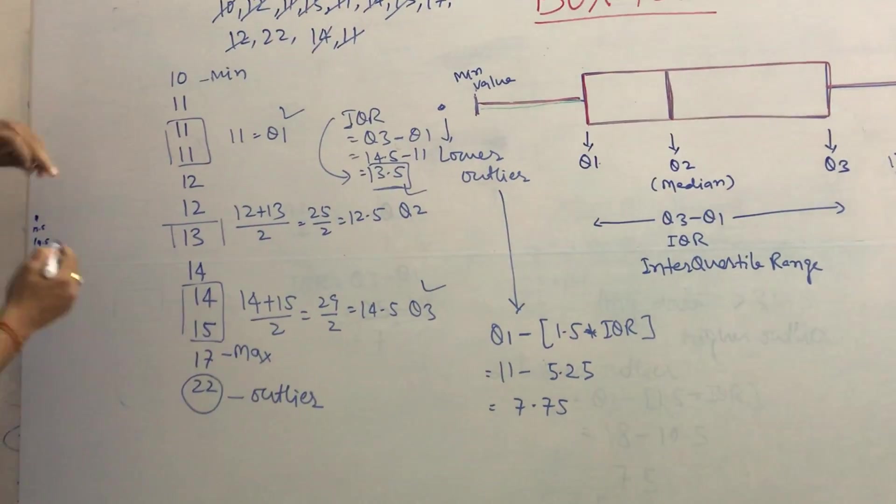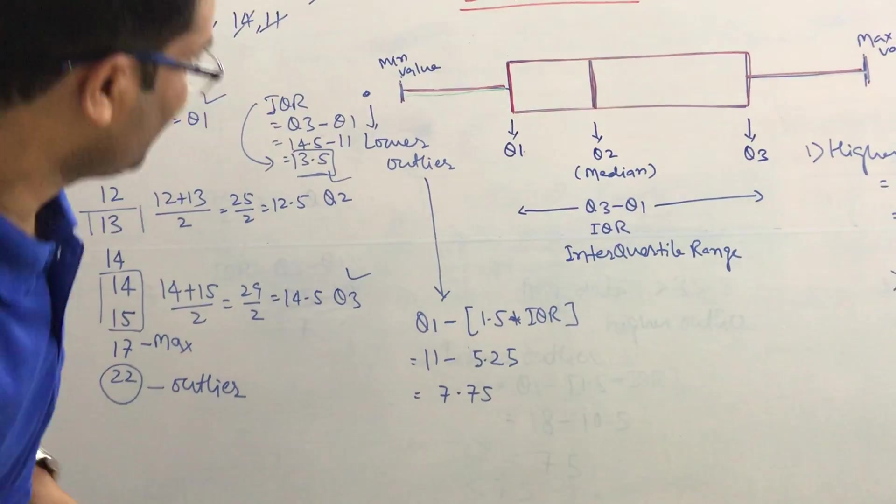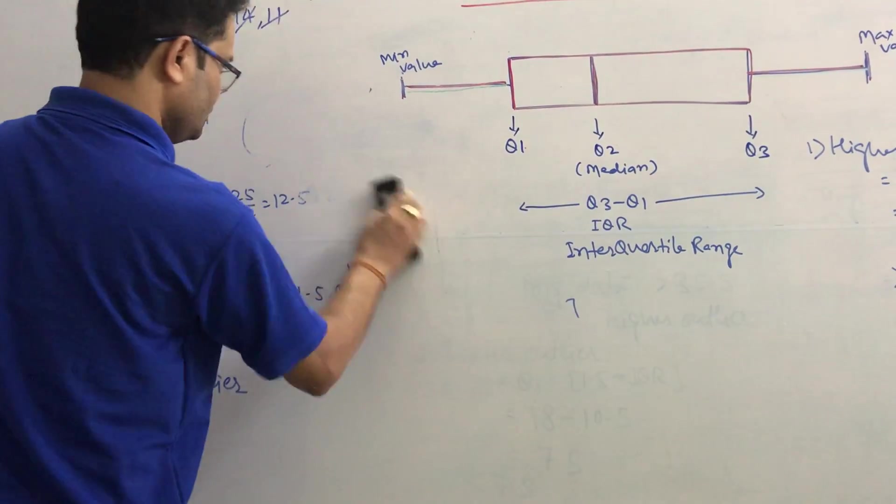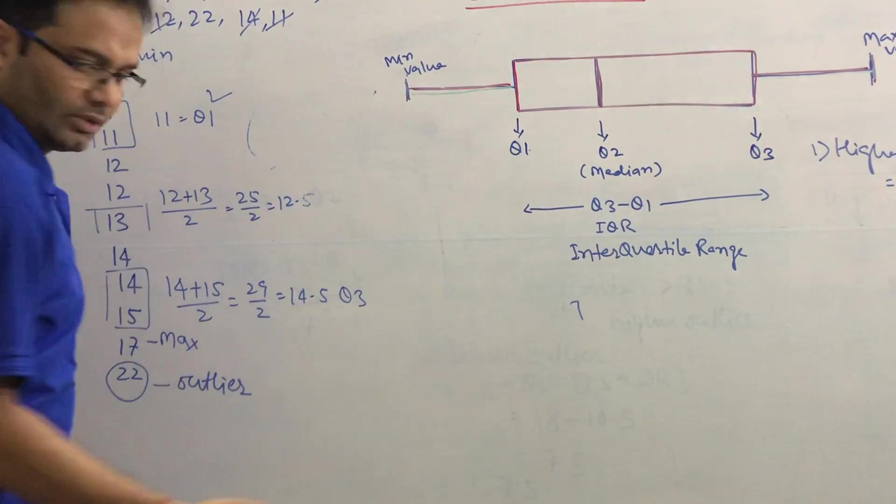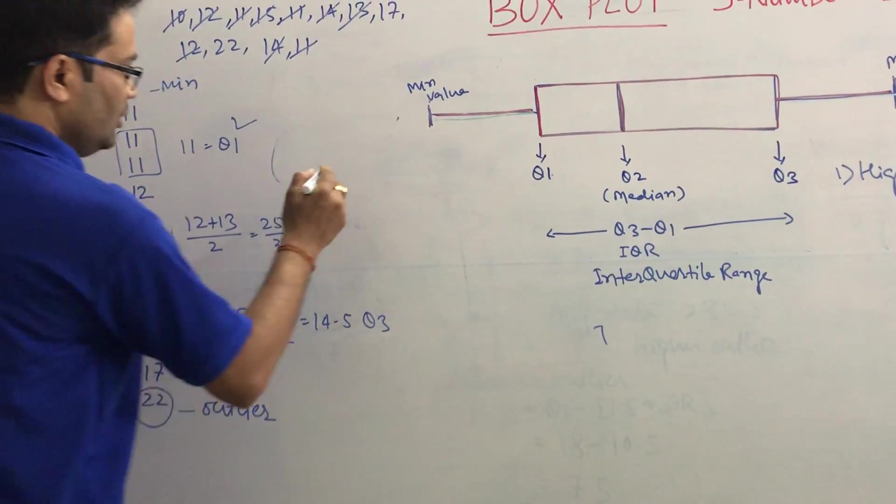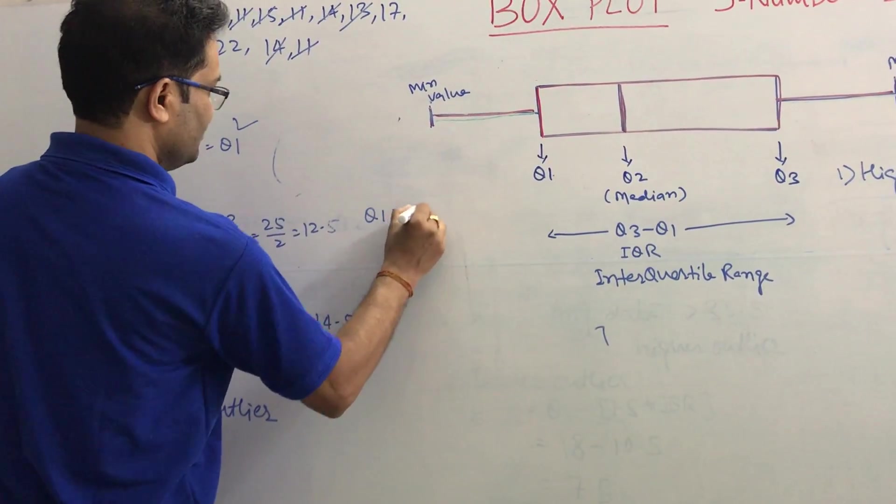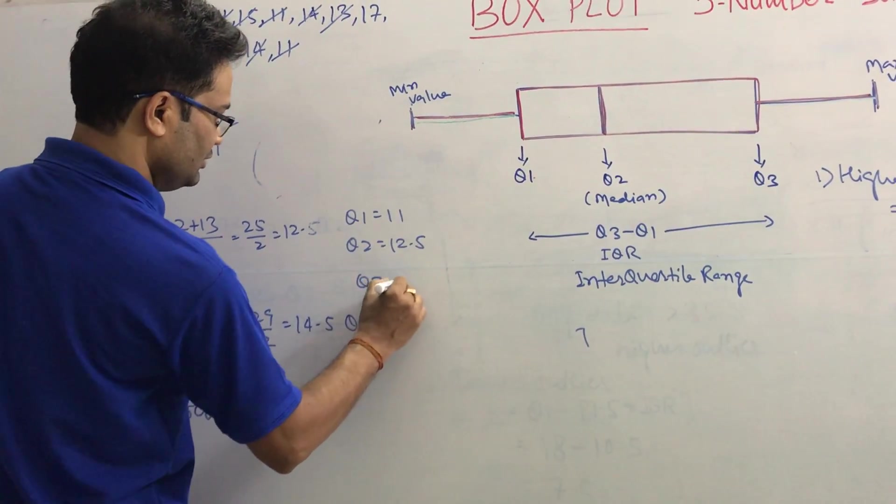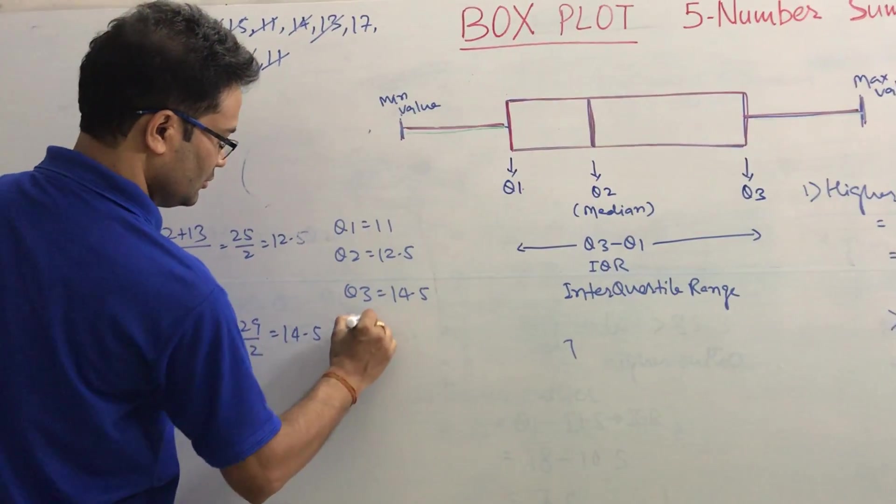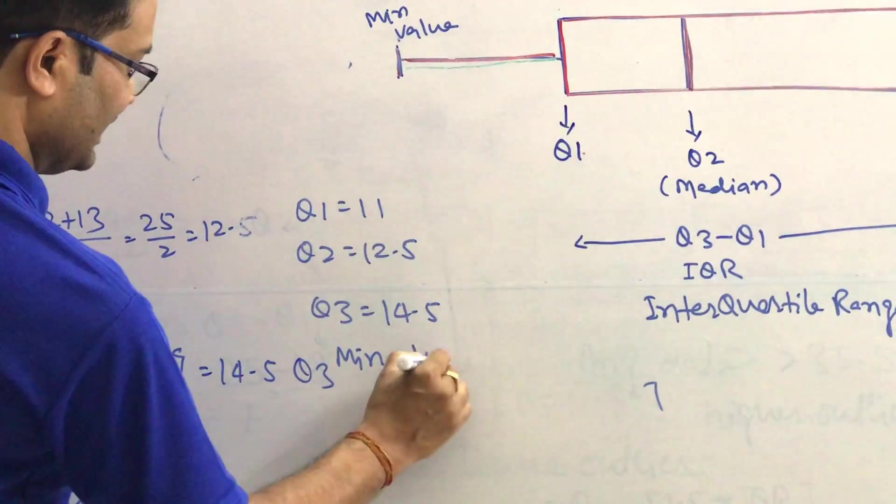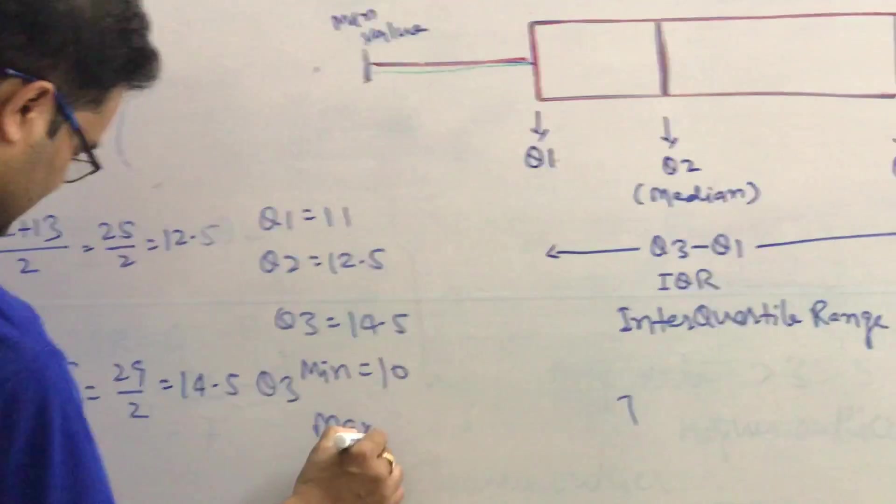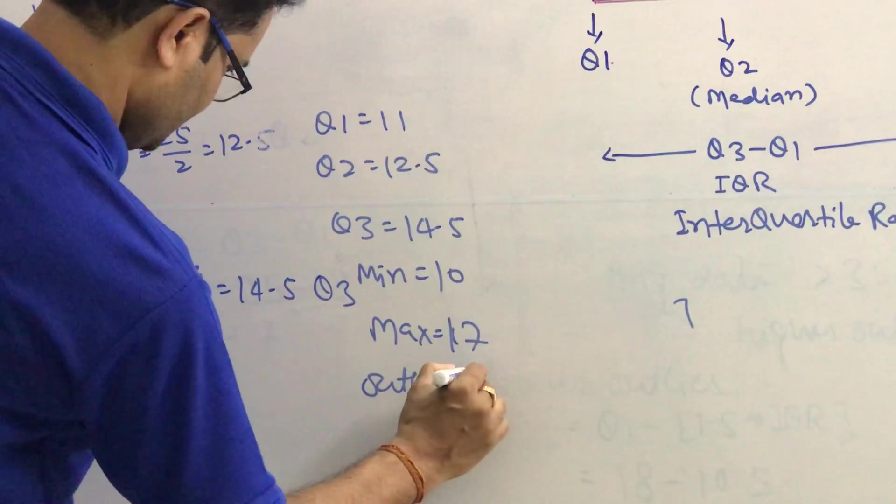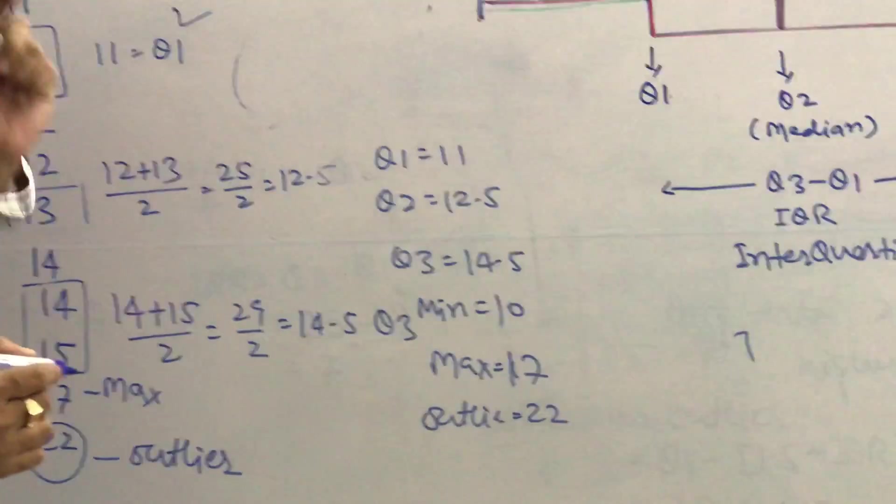Let me put all the data together to easily visualize. Q1 is 11, Q2 is 12.5, Q3 is 14.5, min is 10, max is 17, and outlier is 22.